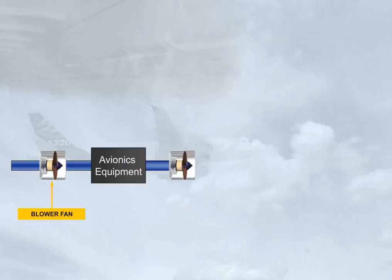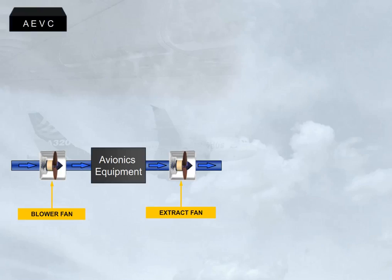Air is circulated by two fans: a blower and an extract. These fans operate continuously as long as the aircraft electrical system is supplied. Note: the operation of the avionics ventilation system is controlled and monitored by an avionics equipment ventilation controller, AEVC.